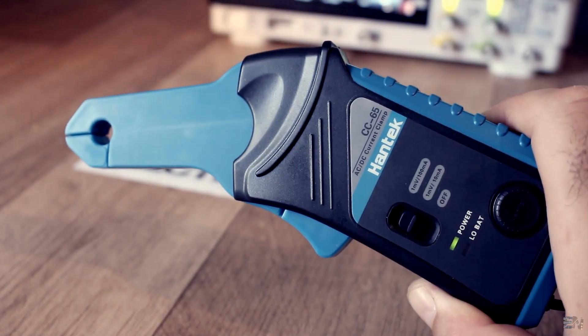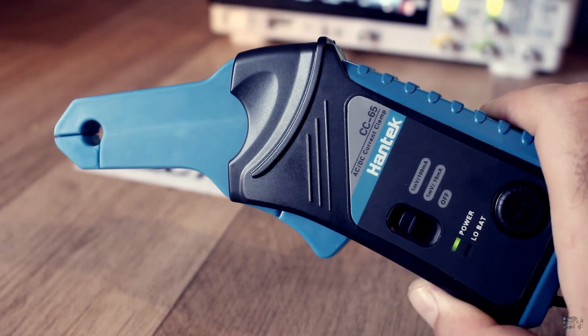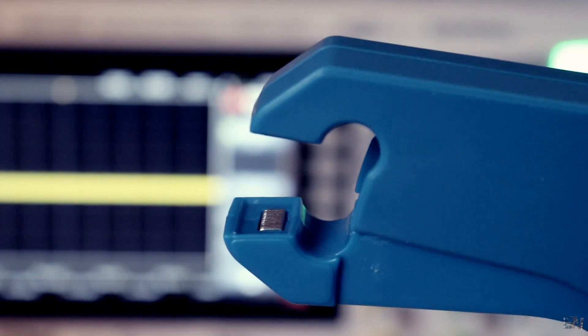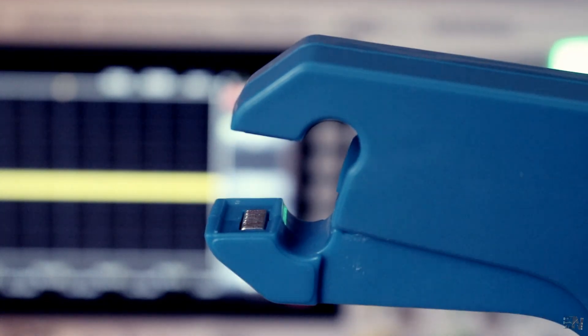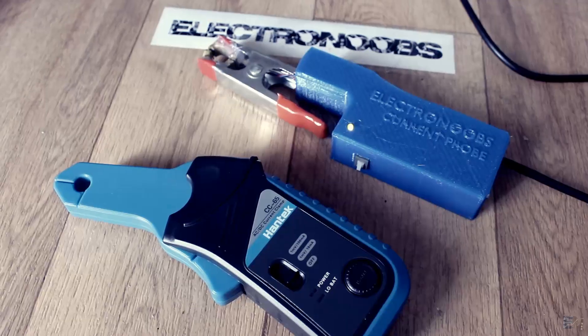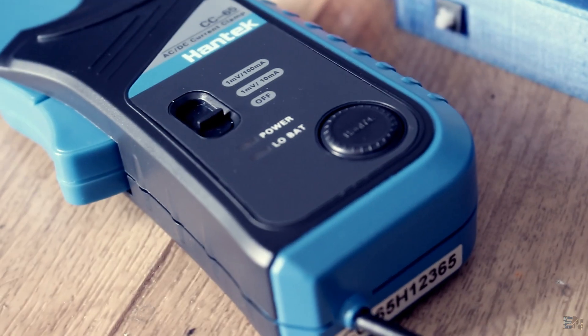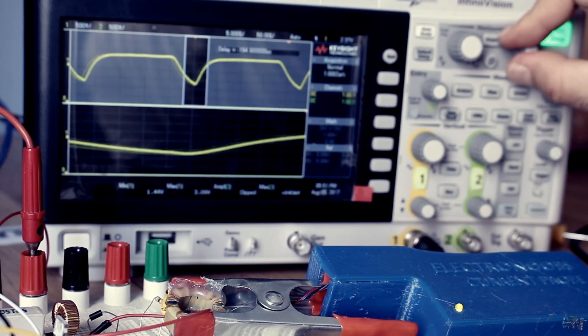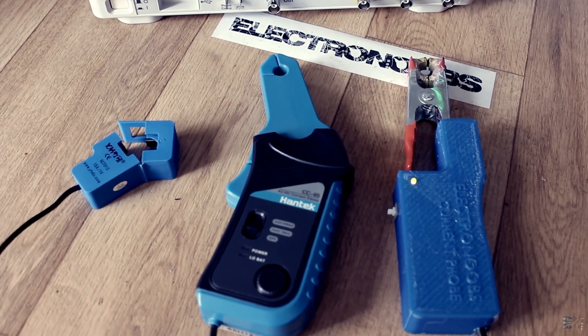This is a non-invasive current probe for the oscilloscope. It is also called a current clamp. This is also a current clamp but kind of DIY. In this video I want to show you how this current clamp probe works, how to use it to observe current values on your oscilloscope and how to make your own.